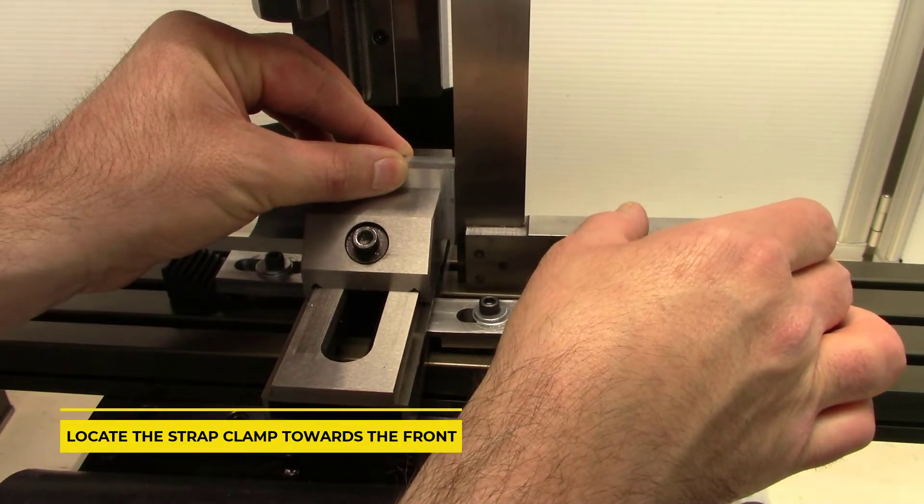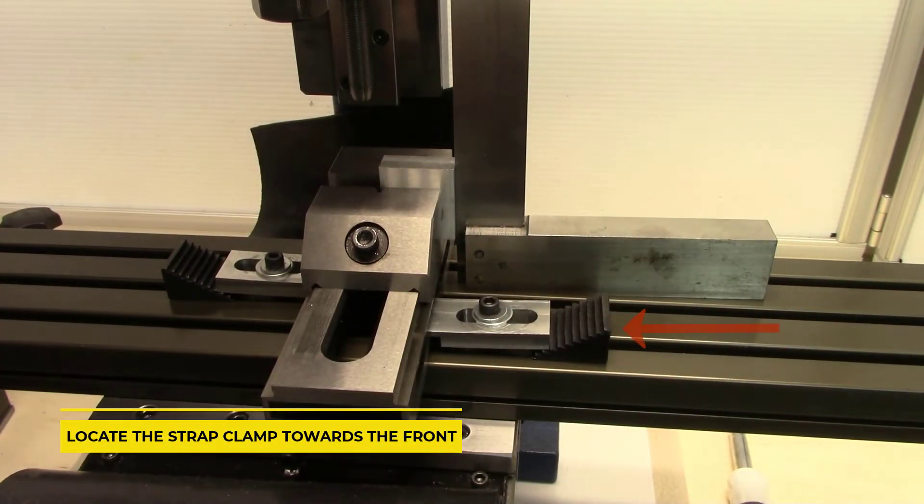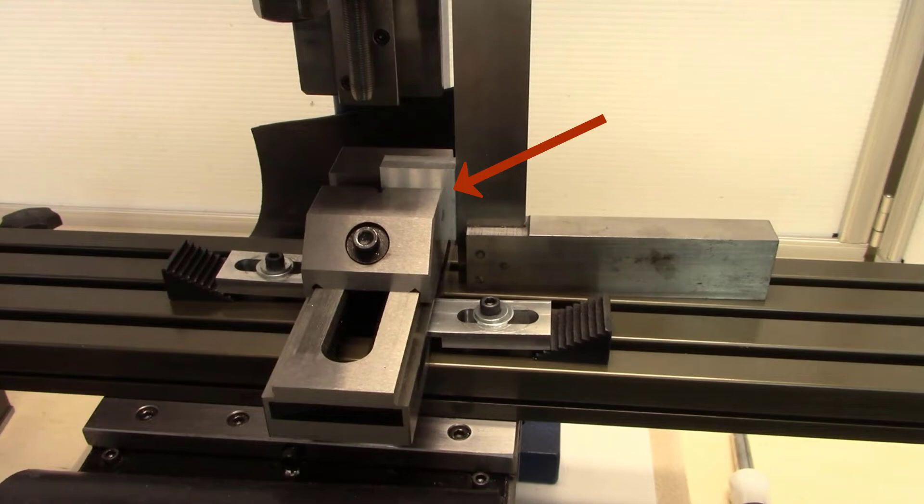I like to have the right side strap clamp towards the front. This allows me to square my material in the vise using a machinist square.